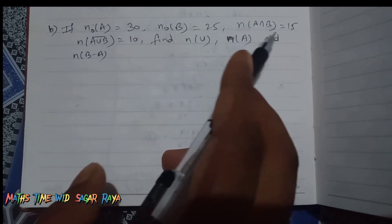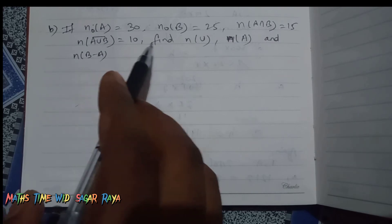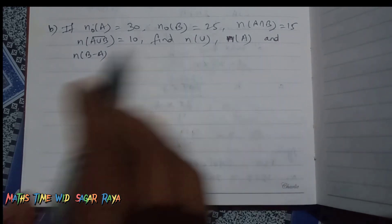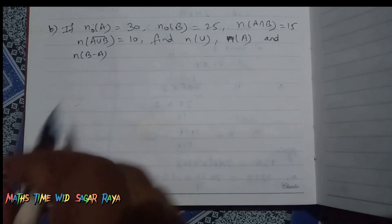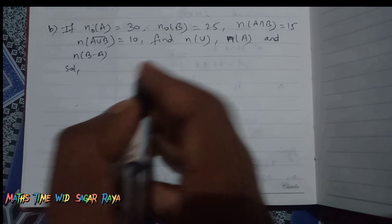= 25, n(A∩B) = 15, and n(A∪B)' = 10, then we have to find n(U), n(A), and n(B-A). So let's find first of all n(U).